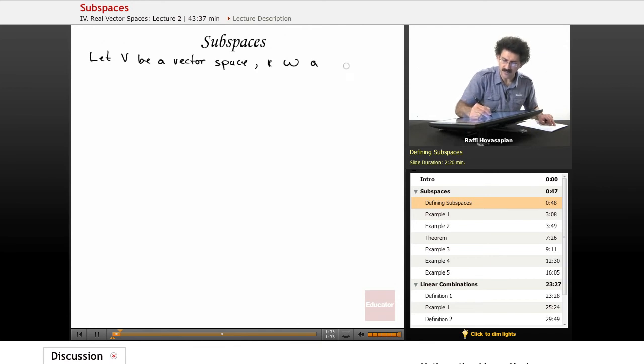We need to specify one quality of that subset. It's very important - it might seem obvious, but we do have to specify it. W is a non-empty subset of V.